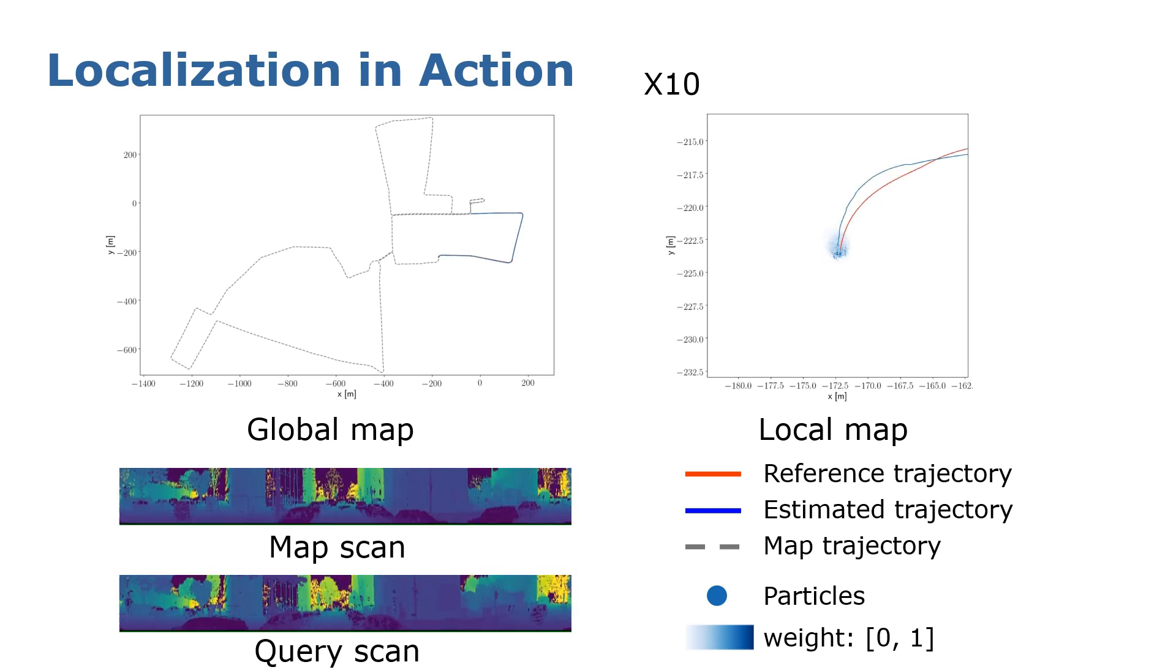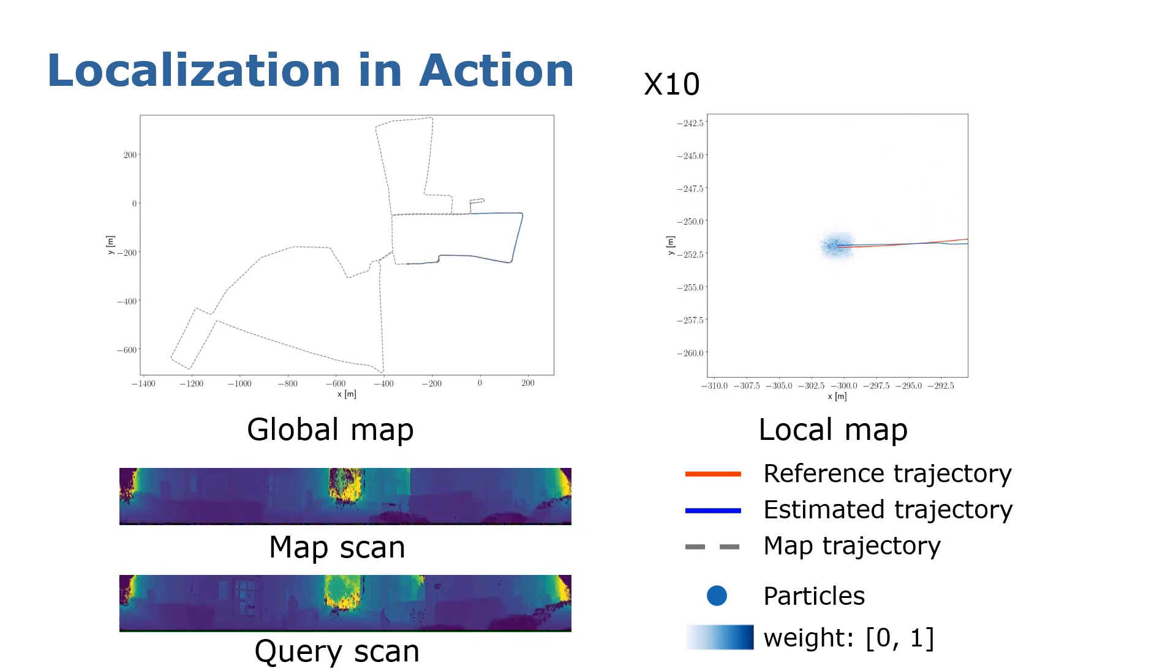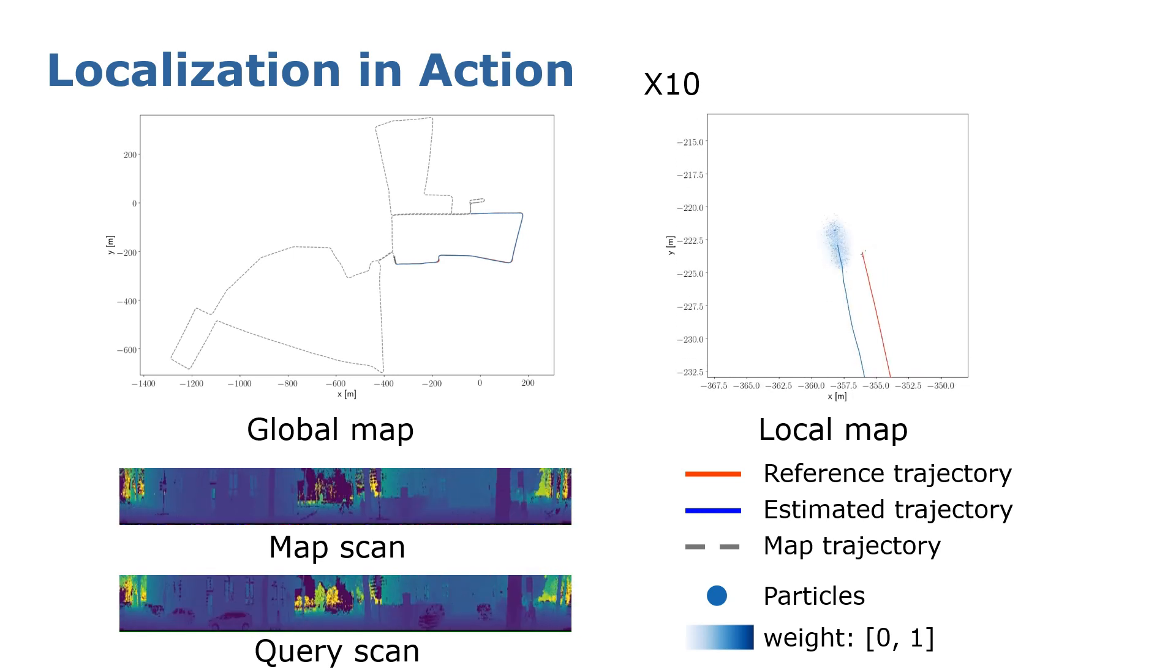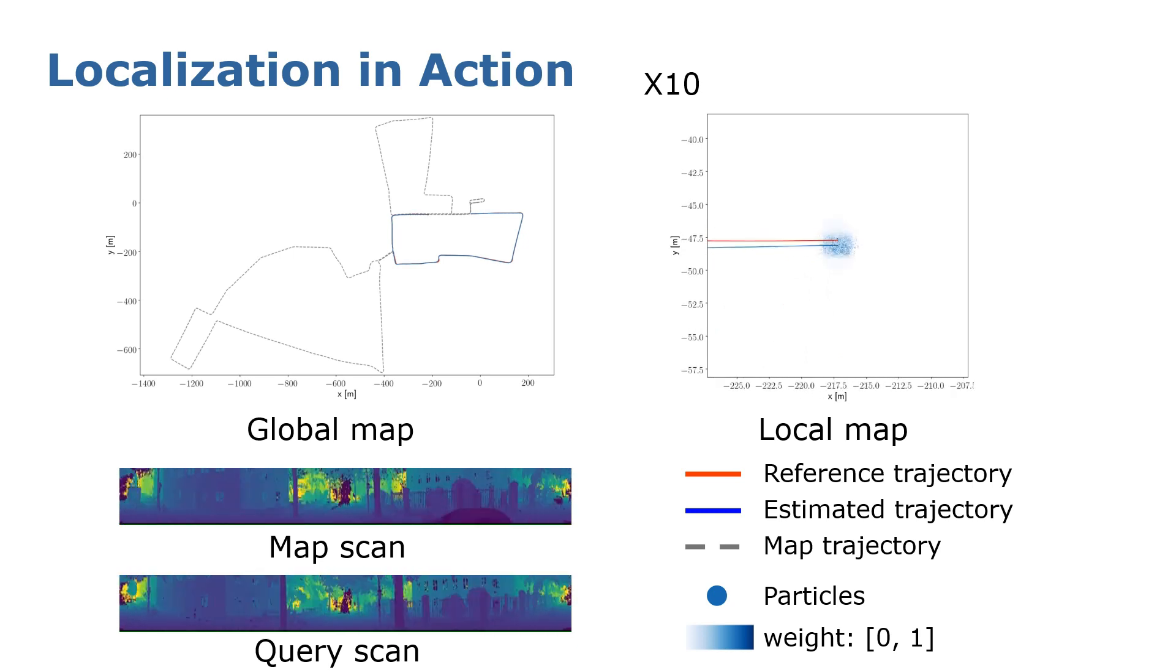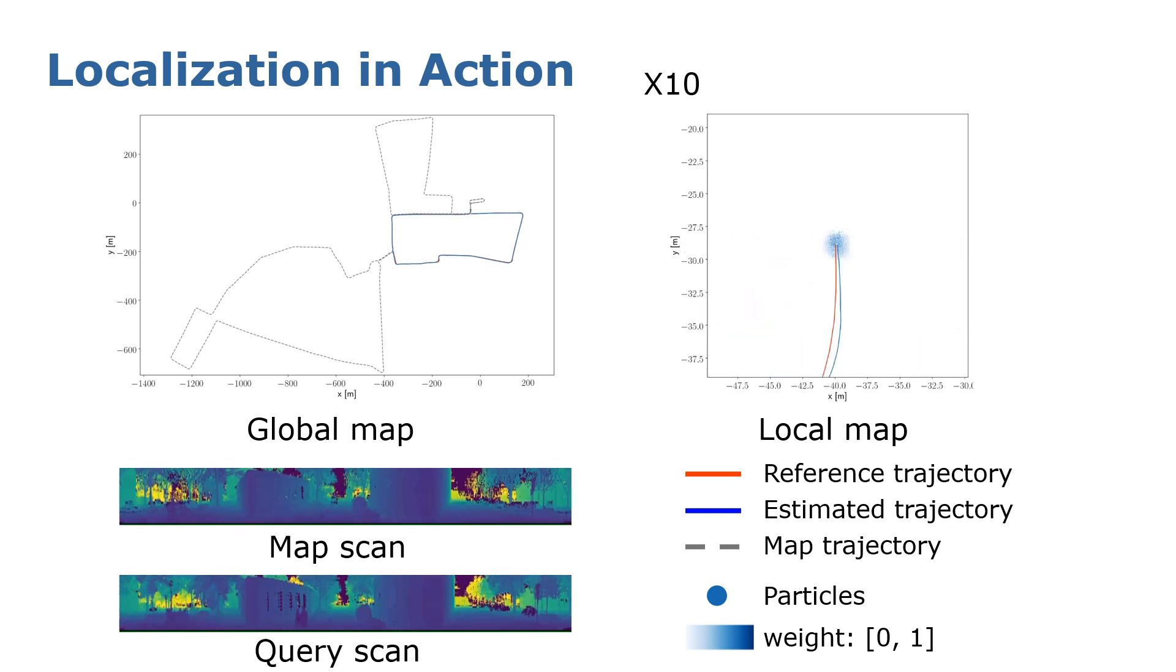Note that our method only uses the 3D LiDAR information as the input and without taking any other information like GPS and images into account. And as can be seen, it can achieve global localization successfully.